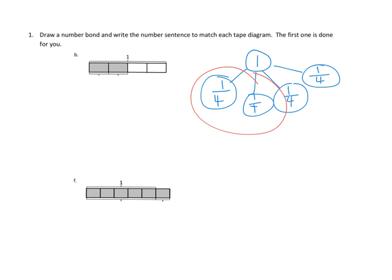So in our diagram, we could say that each of these pieces is 1/4. And then the number sentence we would use to describe something like that is: 1/4 plus 1/4 equals — let's see, how many 4ths would 1/4 plus 1/4 be? If we had 2, that looks like we would have 2/4. We could simplify that later on, but that's all we would use.